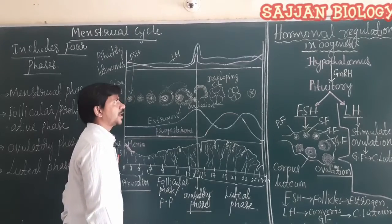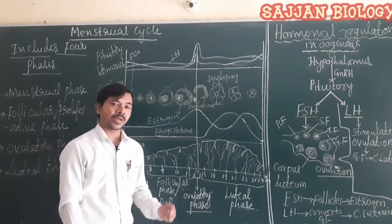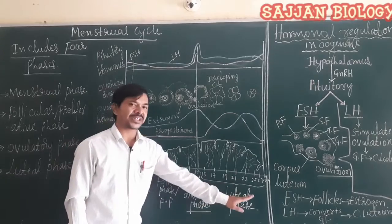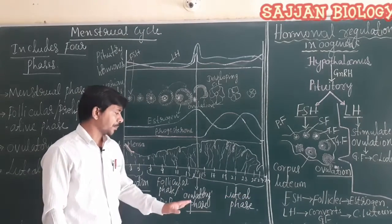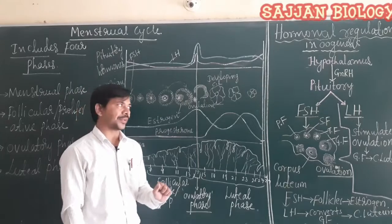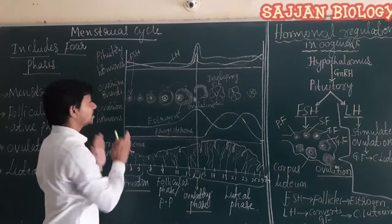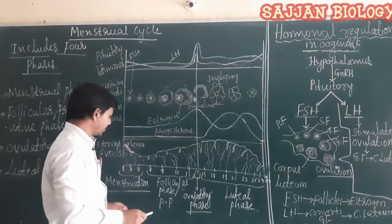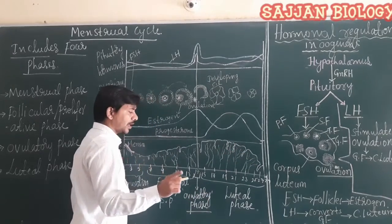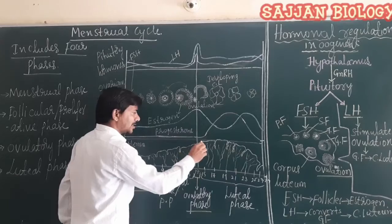After the ovulatory phase comes the luteal phase. This luteal phase is also called the pro-gestational phase, pre-gestational phase, post-ovulatory phase, and pre-menstrual phase — there are many names for the luteal phase.